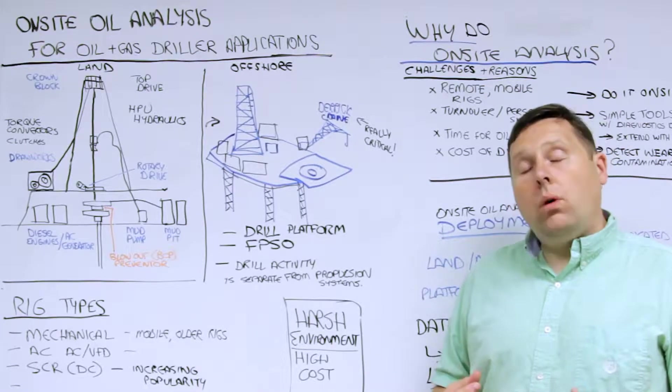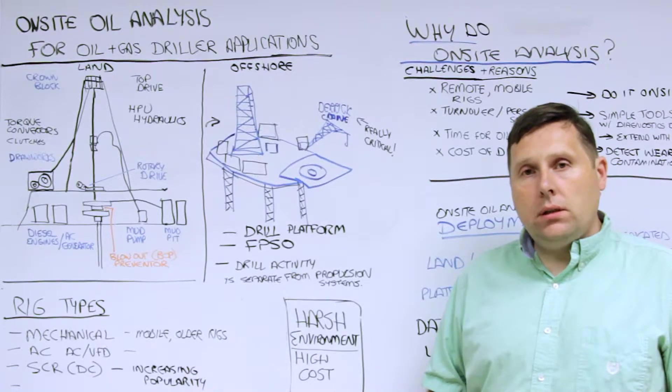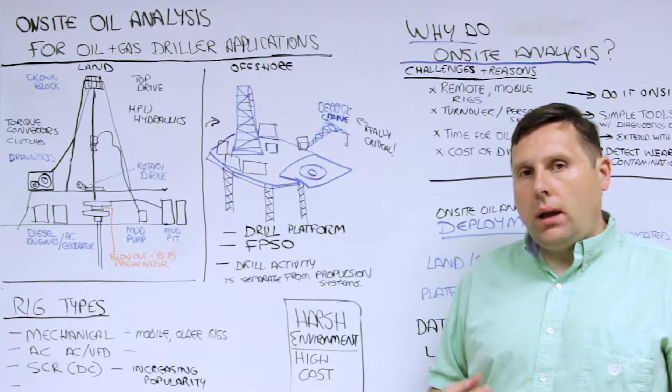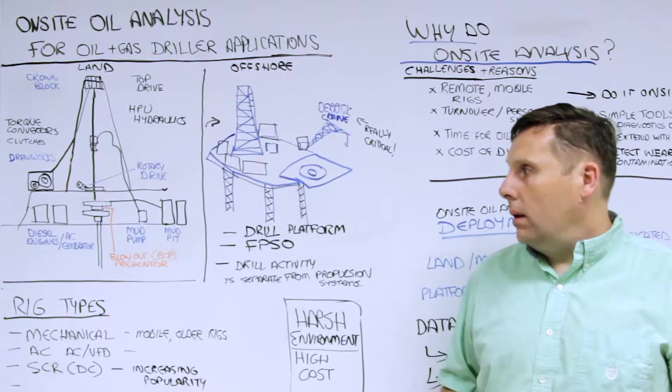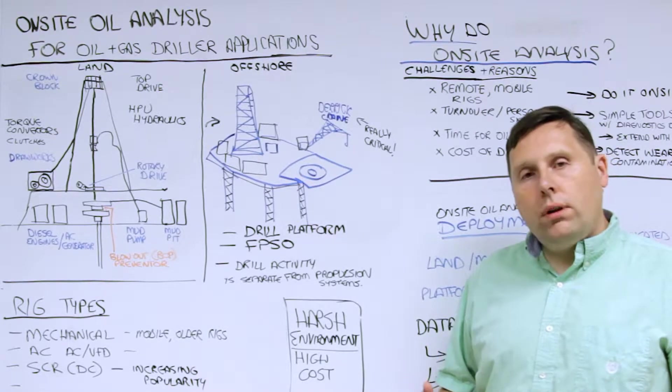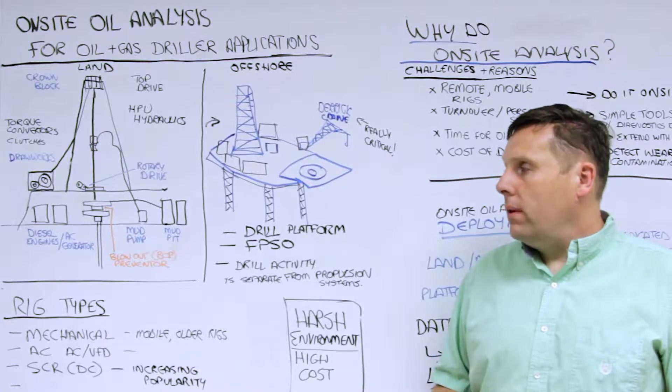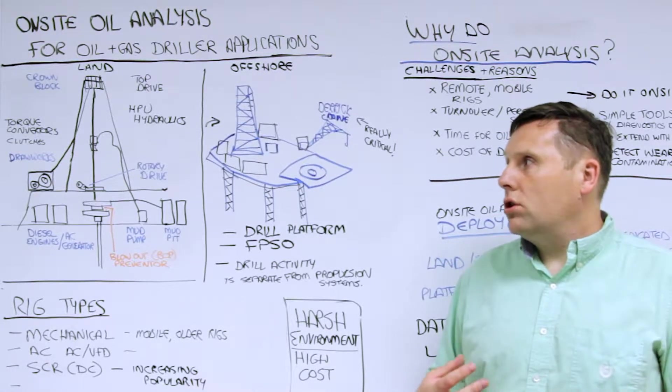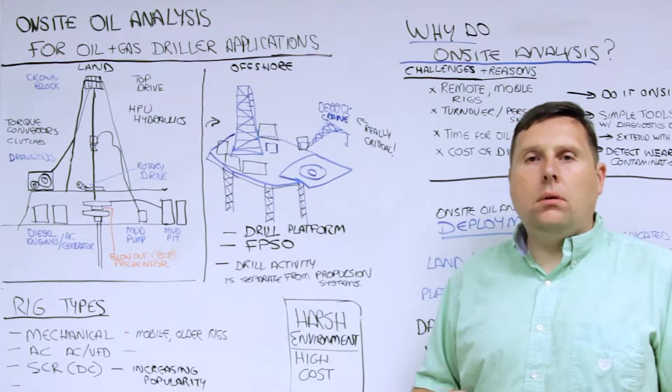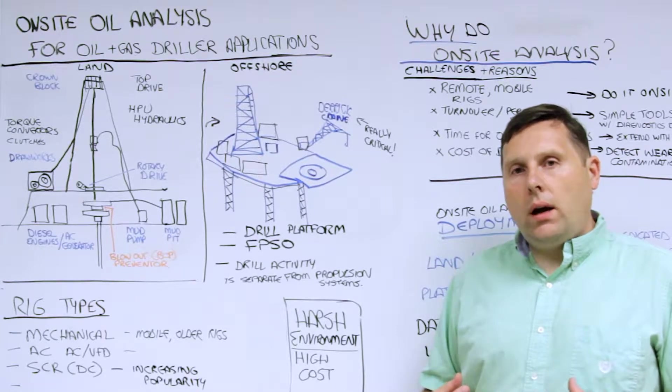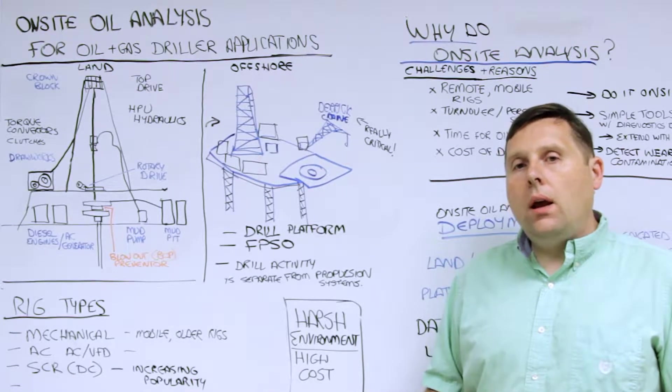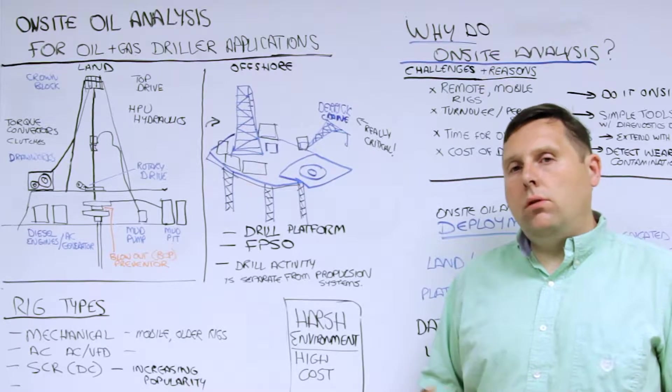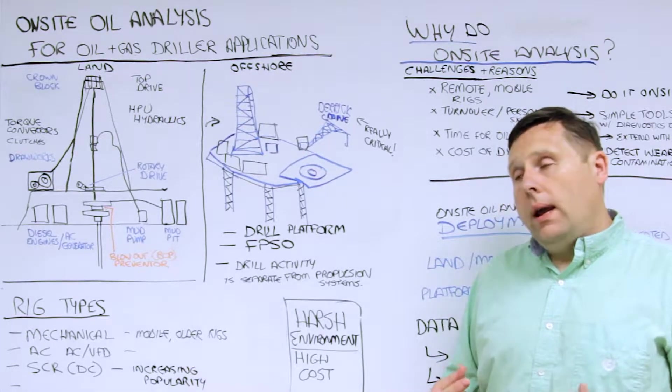The key pieces of equipment in all these rigs is the power plant. Usually these are diesel gen sets, they may have an AC generator with them. They're driving a series of gearboxes, the draw works which controls the pipe and drill, rotary drives, HPU hydraulics, top drives, mud pumps, and in some situations additional draw works clutches and torque converters. If it's in a marine environment, you have all of those plus propulsion systems operating the offshore platform or FPSO.